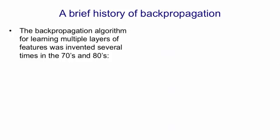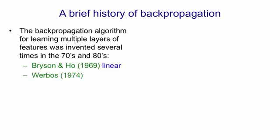Backpropagation was invented independently several times in the 70s and 80s. It started in the late 60s with control theorists Bryson and Ho, who invented a linear version of backpropagation. Paul Werbos went to their lectures and realised it could be made non-linear, and in his thesis in 1974, he published what's probably the first proper version of backpropagation.